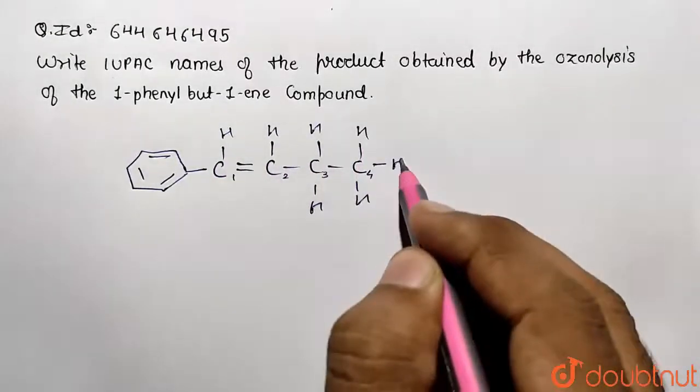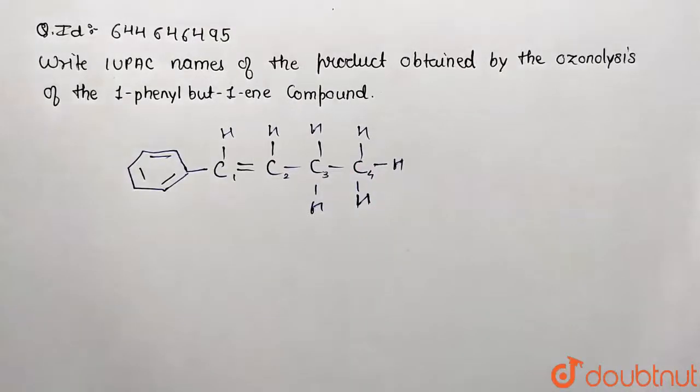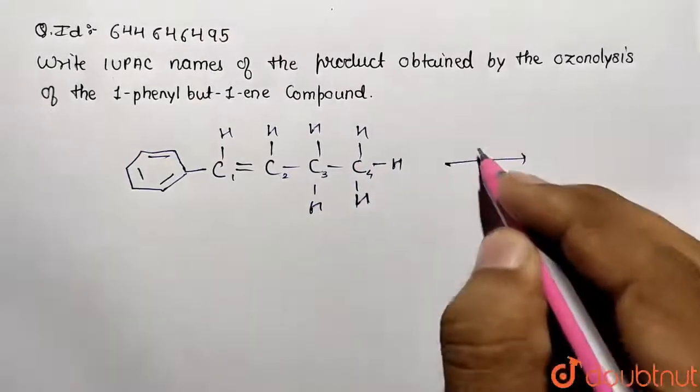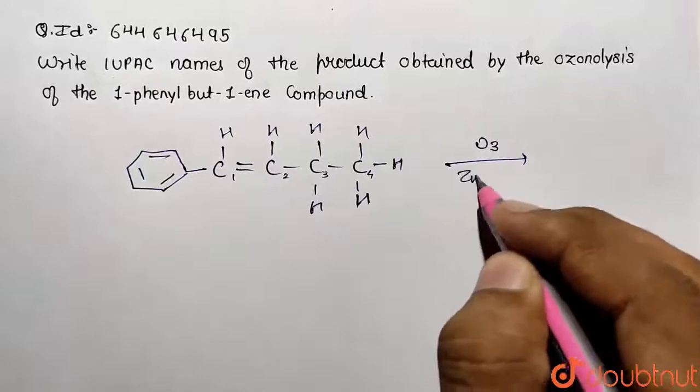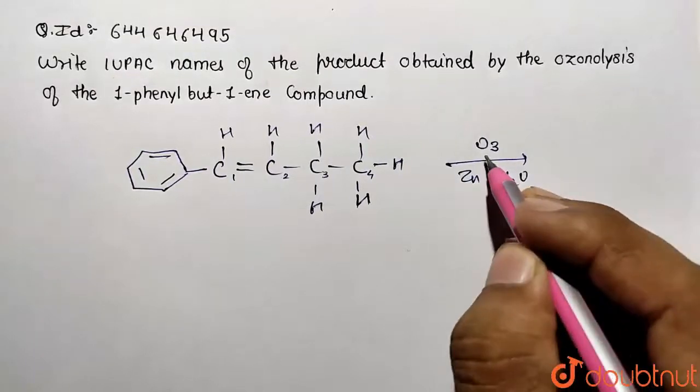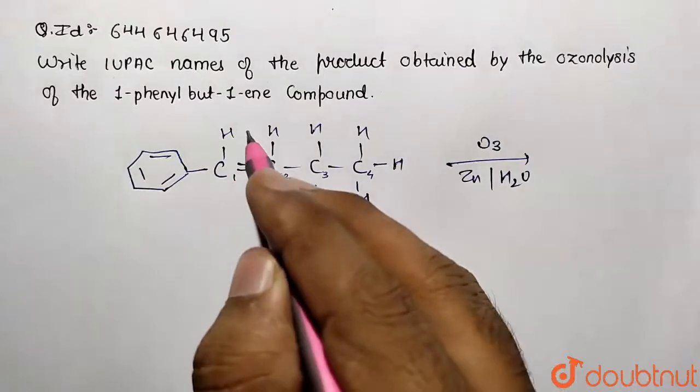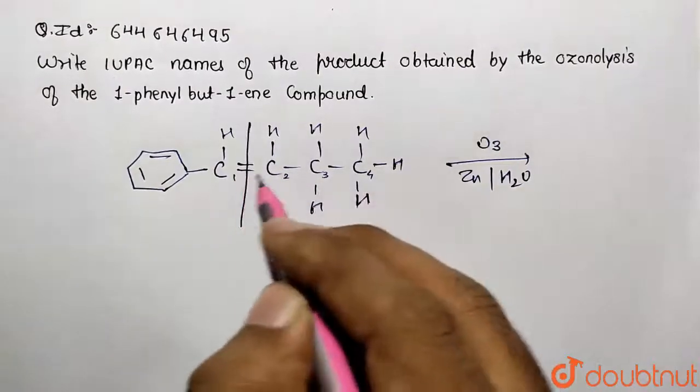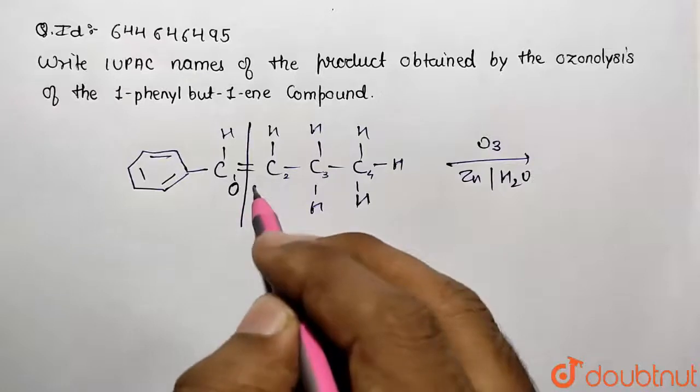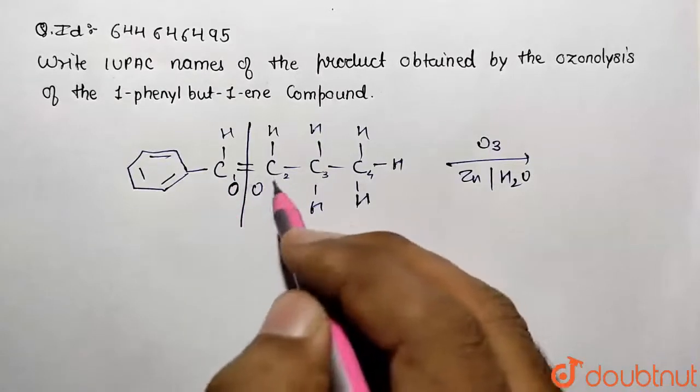Now how will the ozonolysis be performed? Ozonolysis is taking place in the presence of zinc and water and O3 molecule. So what happened? We are basically having the cleavage of this C=C. So double bond has been cleaved and two oxygens are given with respect to these groups.